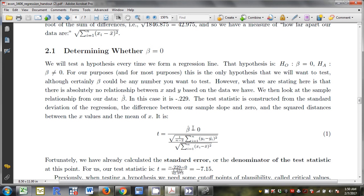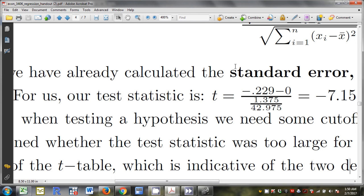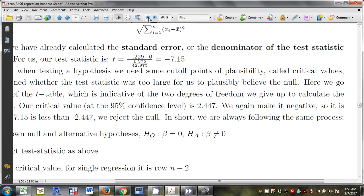Here's my test statistic. Sample slope minus 0. This is the standard deviation of the regression. This is the sum of squared deviations. Our test statistic, minus 0.229 minus 0. Standard deviation, if you zoom in here, 1.375. This is 42. It's sum of squared deviations. We get a minus 7.15.